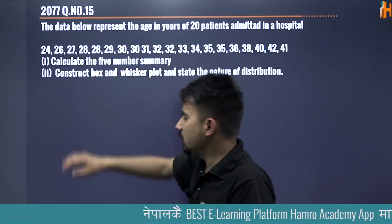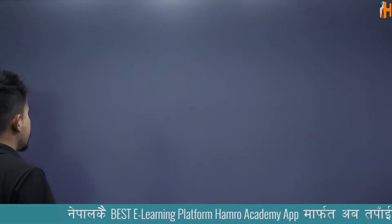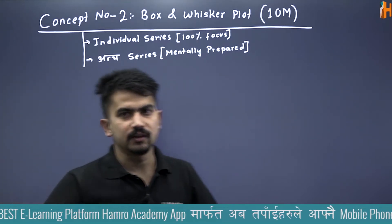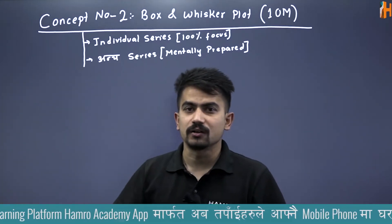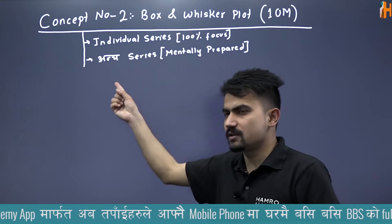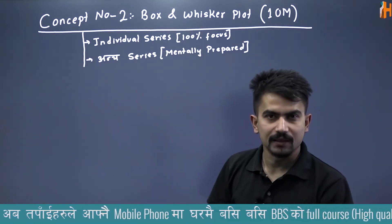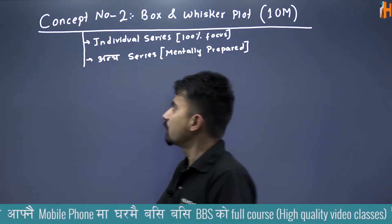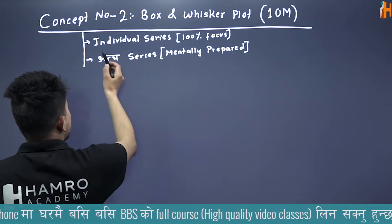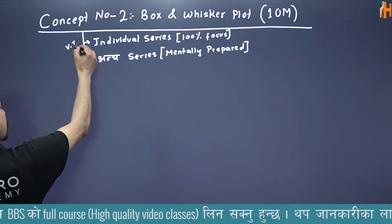If you have a question in the box and whisker plot format, then you have a conclusion. You will need to ask about the individual series — it is important, most important, very very important.